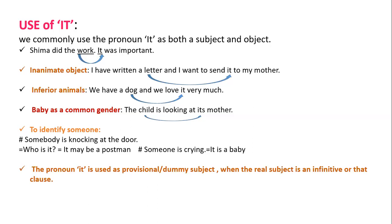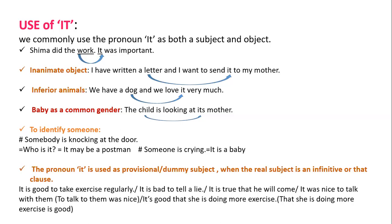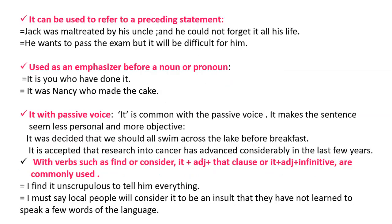The pronoun 'it' is used as a provisional or dummy subject when the real subject is an infinitive or a 'that' clause. For example: 'To talk to them was nice' — it is more natural to say 'It was nice to talk to them.' 'It is good to take exercise regularly.' 'It is bad to tell a lie.' 'It is true that he will come.' 'It's good that she is doing more exercise.' Instead of placing a long clause at the beginning, you can use 'it' as a provisional subject.